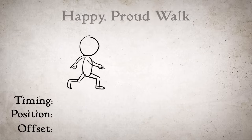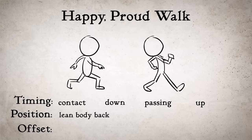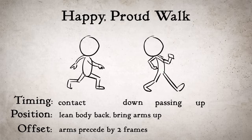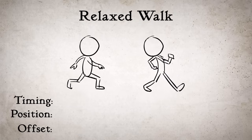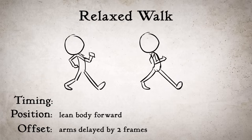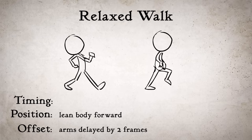To give our character a happy, proud walk, let's lean his body back, and change the timing to emphasize his contact pose, and bring his arms way up. Then let's offset his arm movement so that there are two frames ahead of the legs, in order to make it seem like he's leading with his arms, giving him a more powerful attitude. In order to make him look relaxed, we just need to offset the arms in the other direction, and make them lag behind the rest of the body by two frames. Let's lean him forward — now he looks pretty chill.